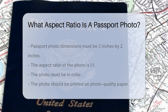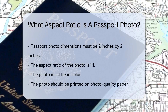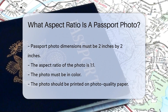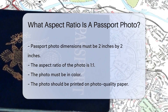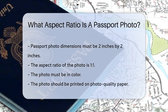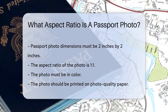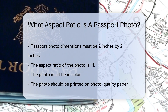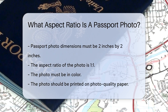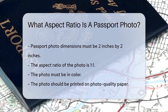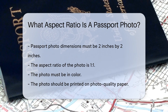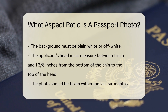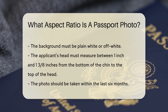When applying for a U.S. passport, the photo requirements are specific. The dimensions of the photo must be 2 inches by 2 inches. This square shape means the aspect ratio is 1:1. The photo must be in color and printed on photo-quality paper. The background must be plain white or off-white.